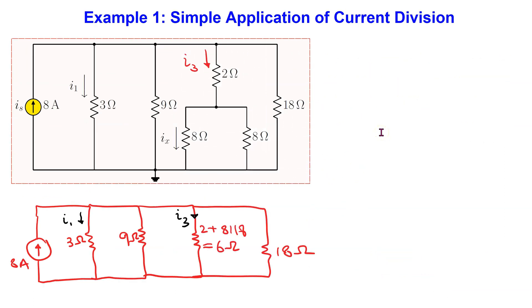Let us consider a simple application of current division. In this circuit, the currents of interest are I1 and Ix.